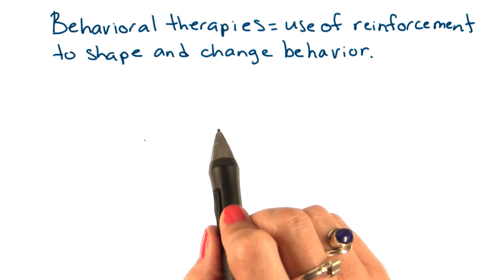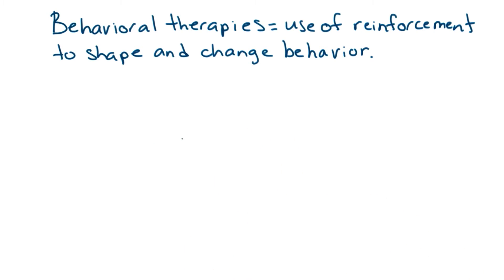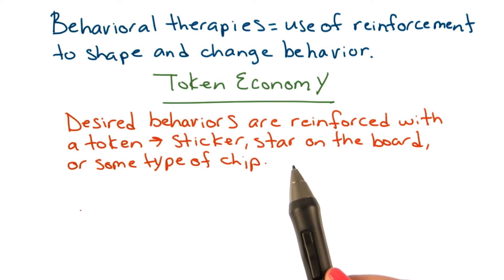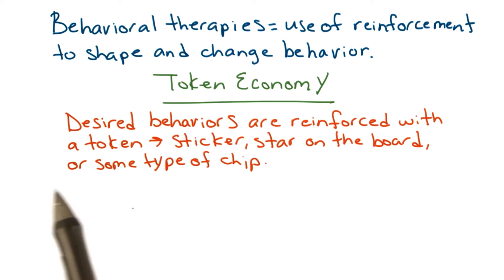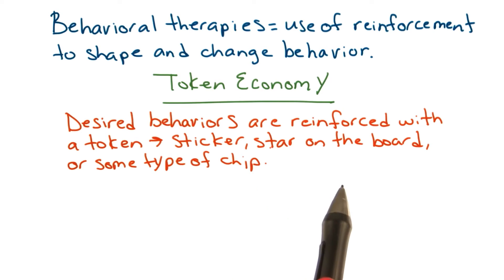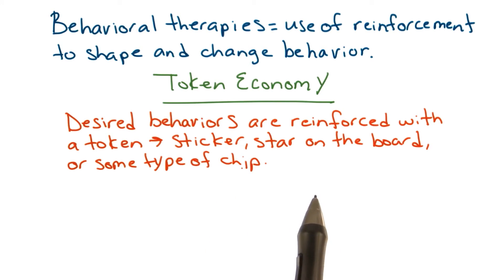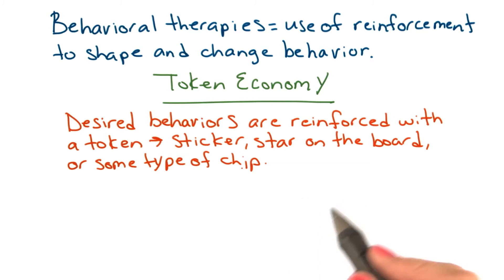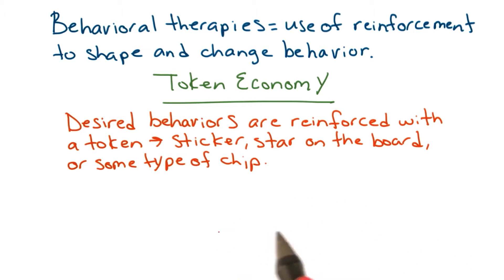Let's look at a different type of therapy that uses reinforcement. One successful ABA technique used by behavioral therapists is a token economy. Here, desired behaviors are reinforced with a token — something like a sticker, a star on the board, or some type of chip. These tokens are accumulated and can later be exchanged for other items or privileges.